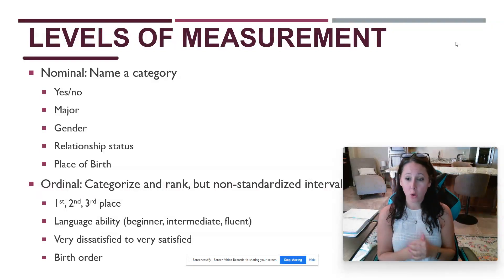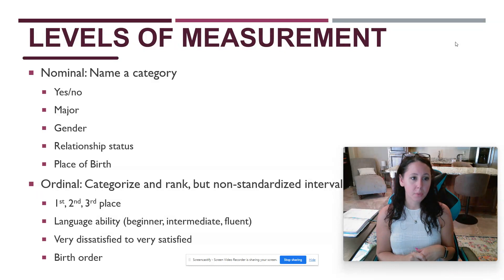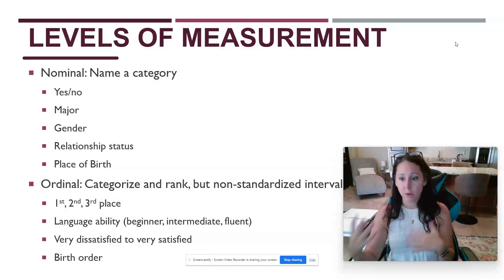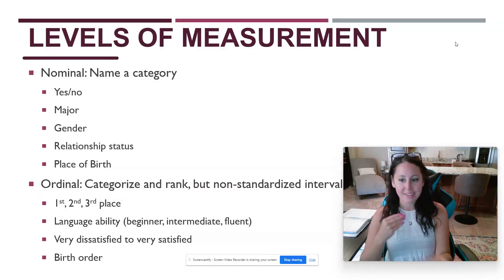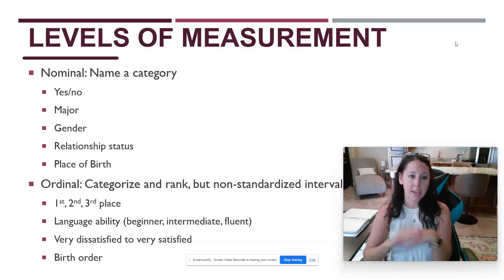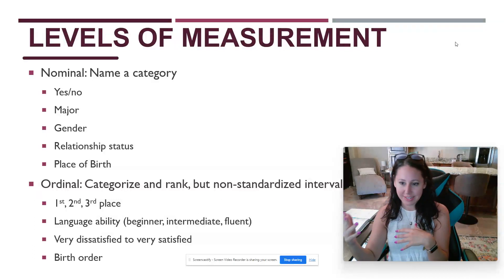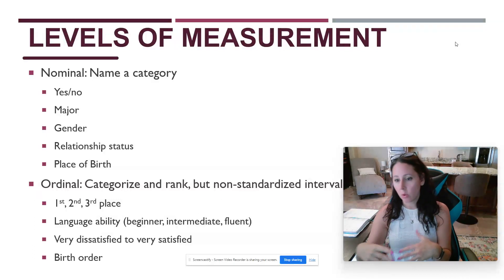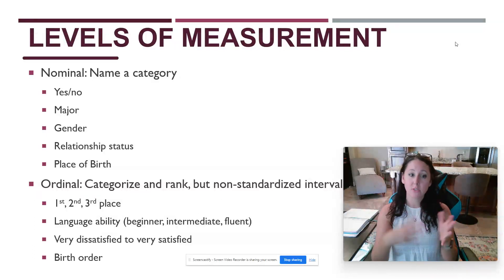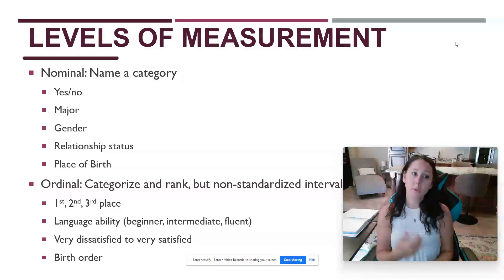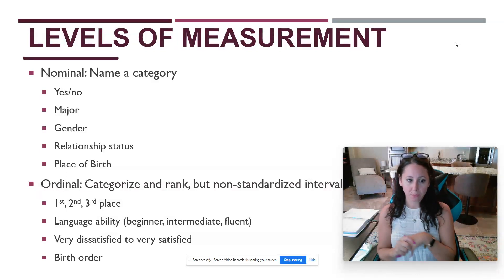You are naming a category. It's not a numerical answer. In statistics, we do have a way of coding variables into numbers — I can turn words into numbers and work with them. But for the purposes of surveys and questionnaires, a nominal variable is something where you're just naming a category.